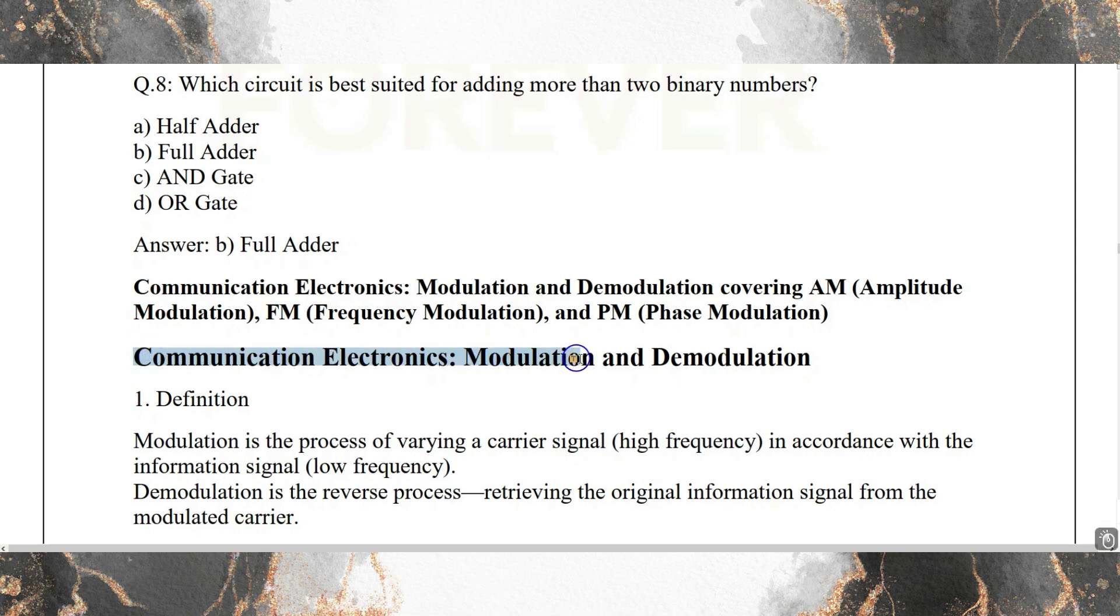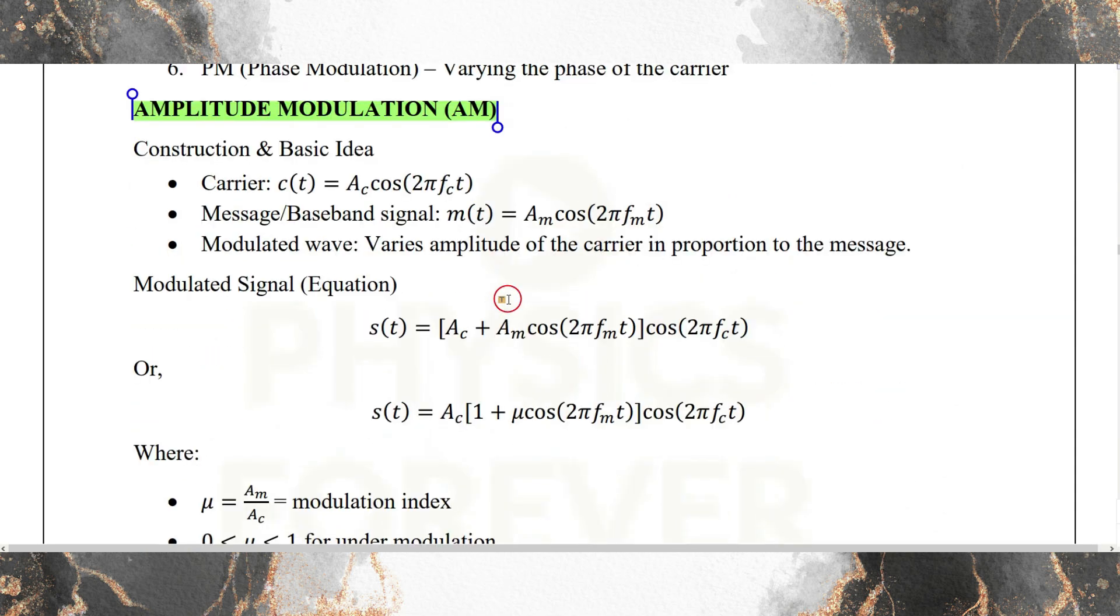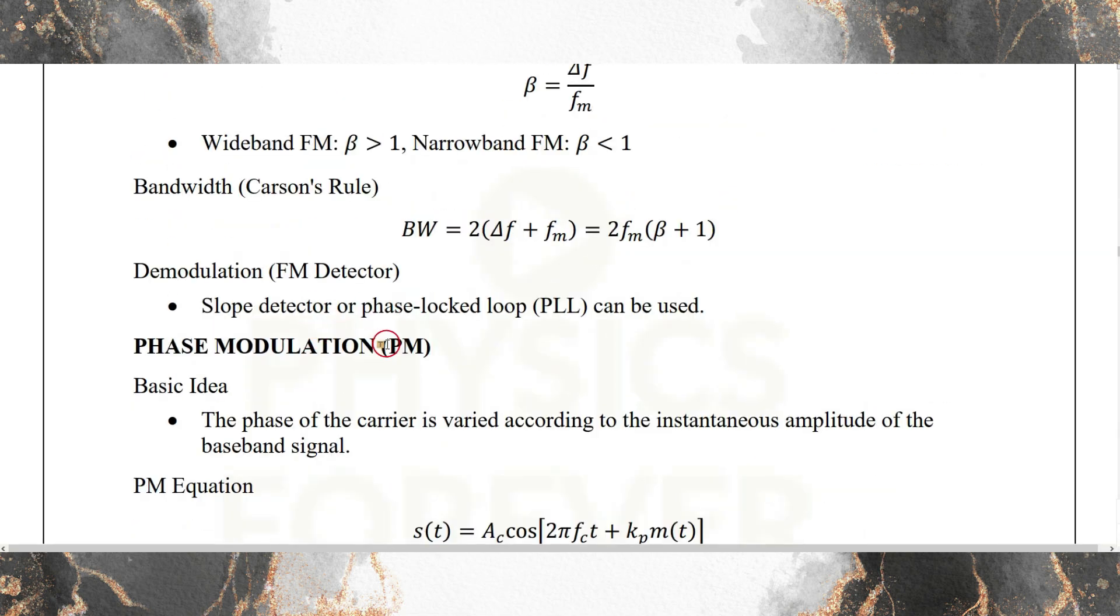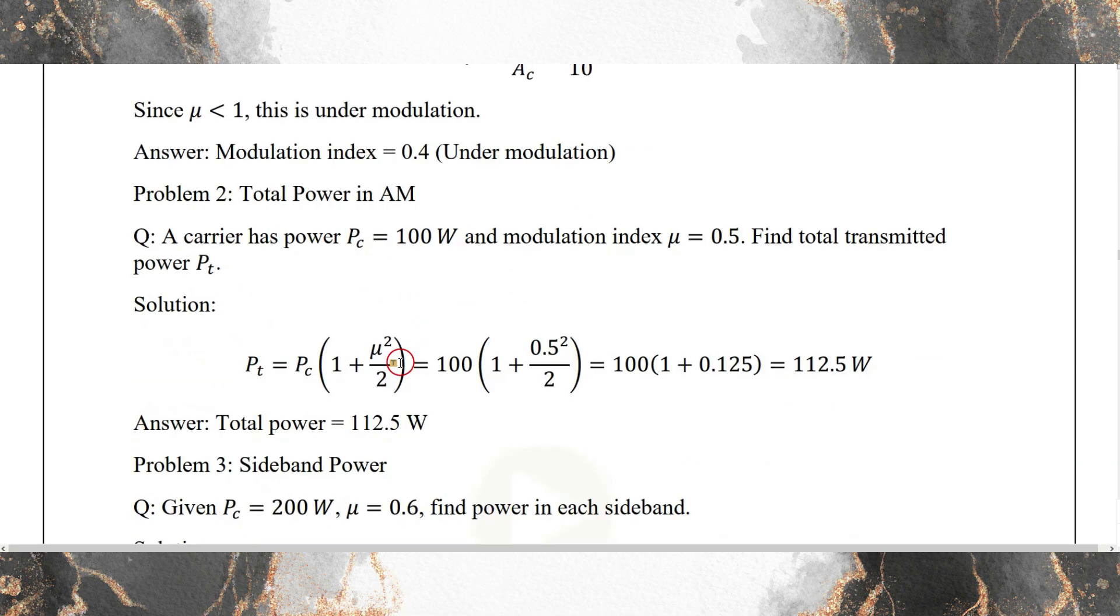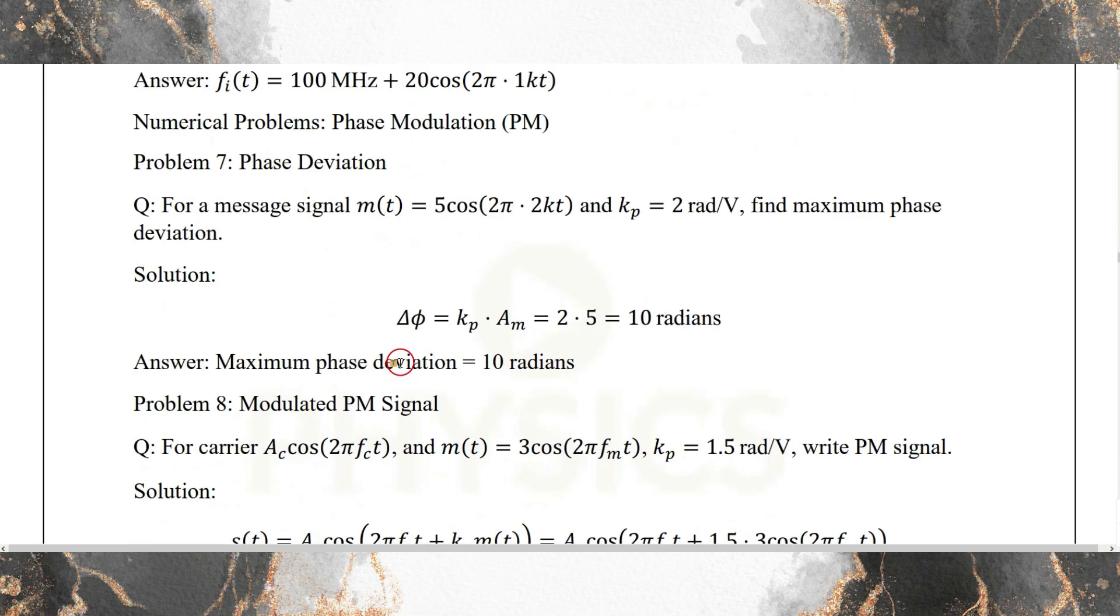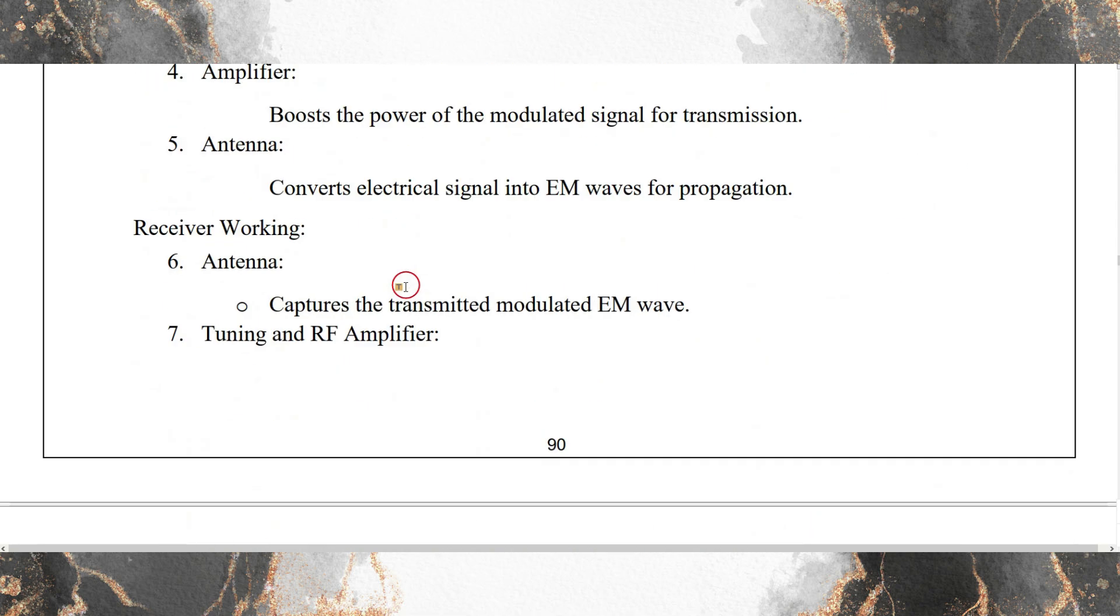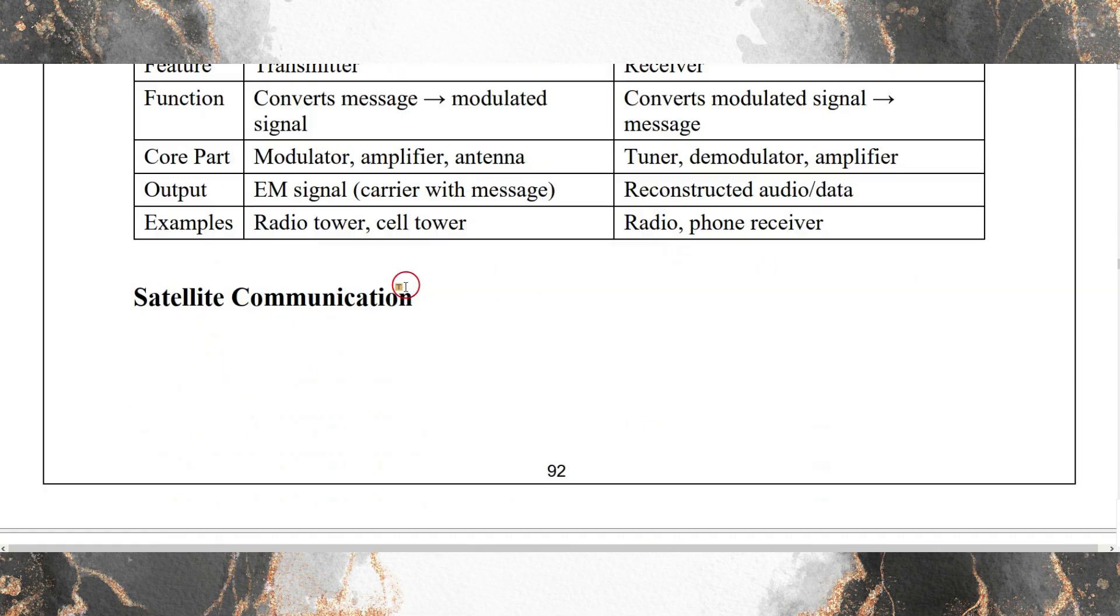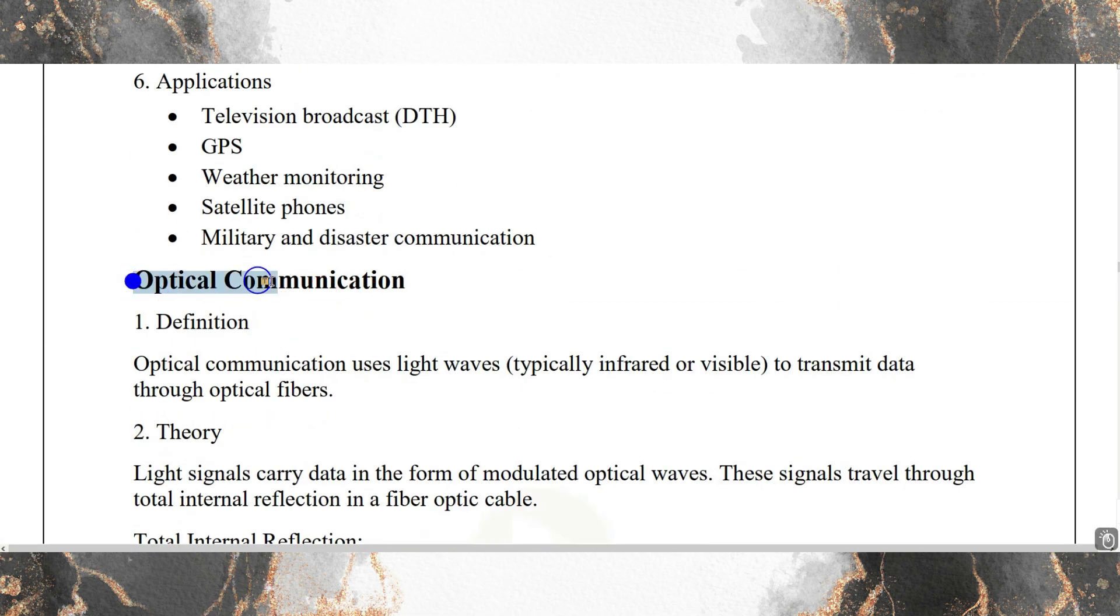Then communication electronics - modulation and demodulation. Then amplitude modulation AM, FM frequency modulation, then phase modulation. The transmitter and receiver in communication system, satellite communication, optical communication.